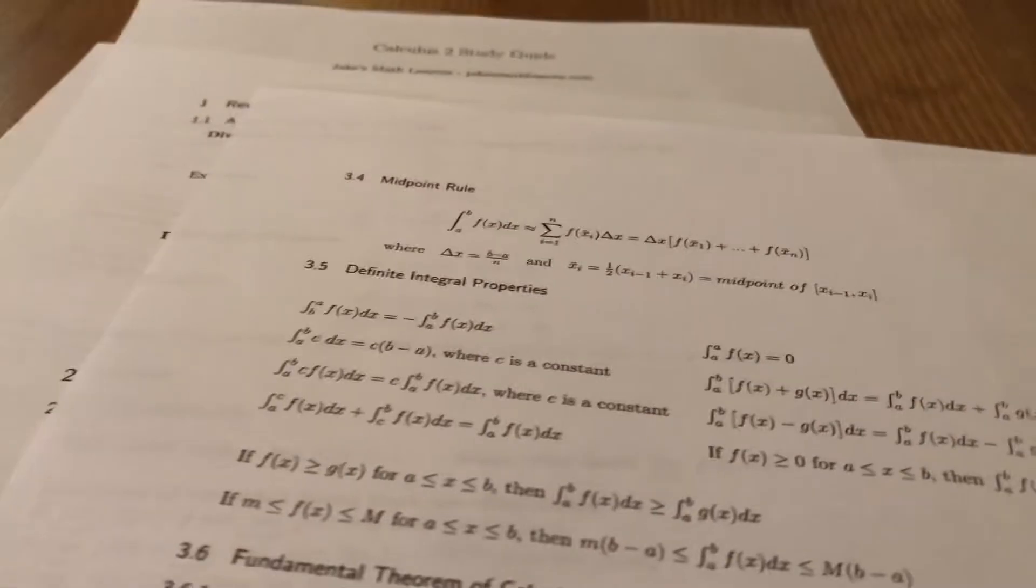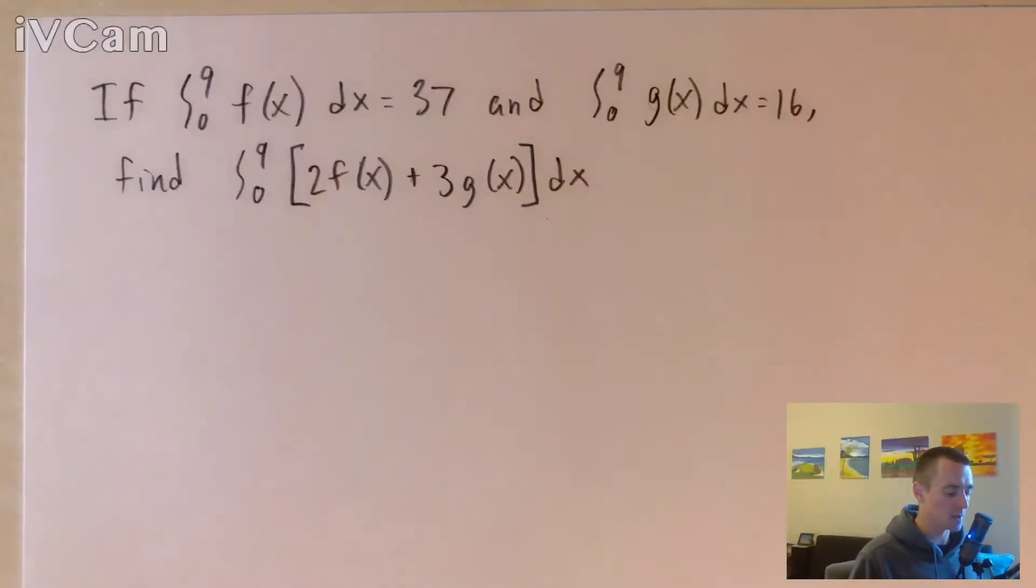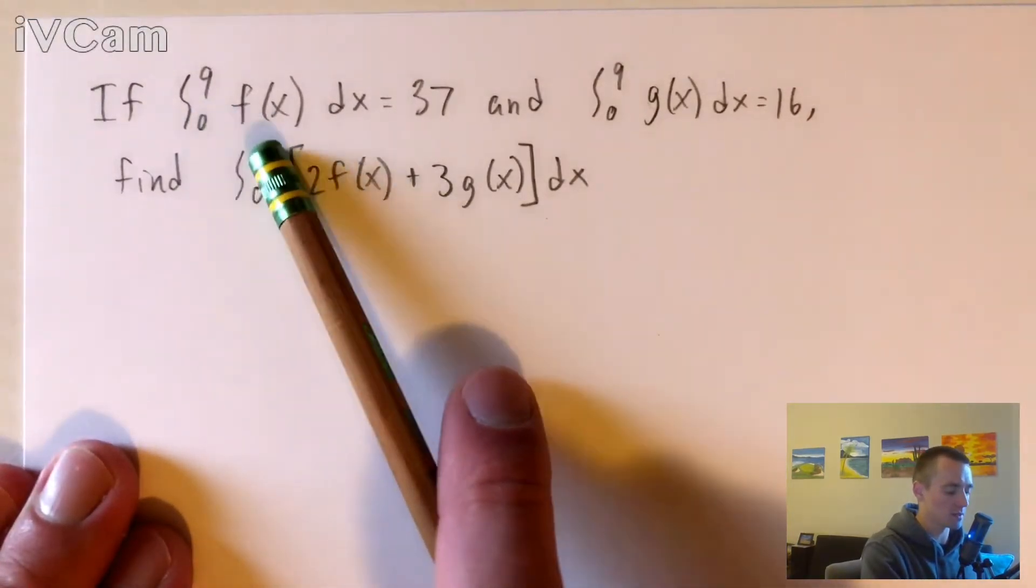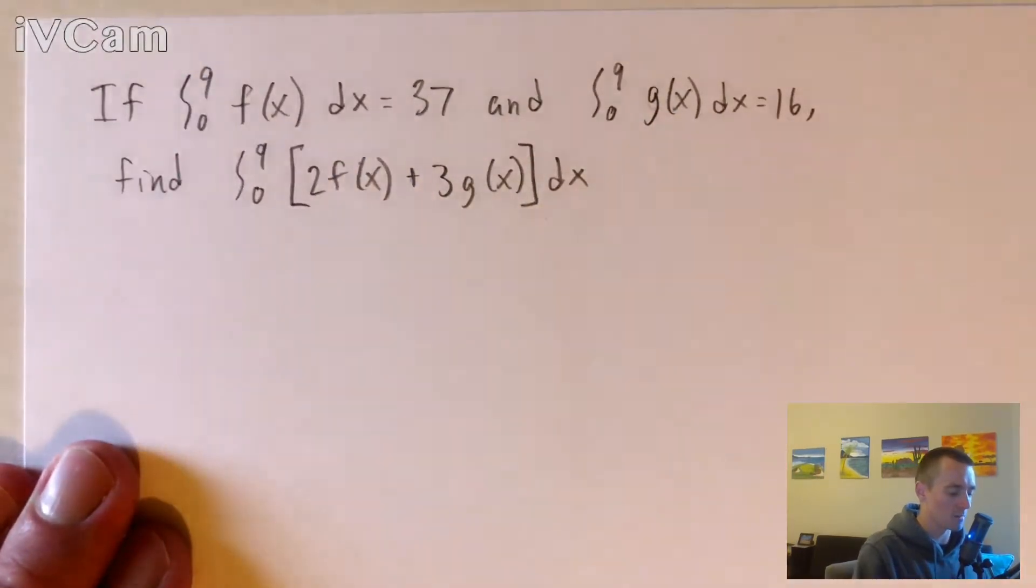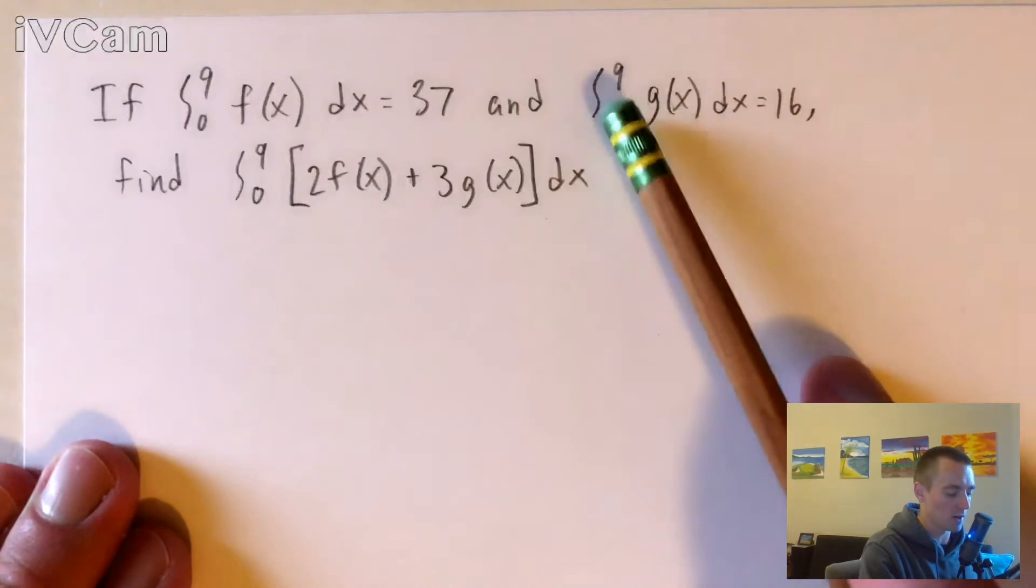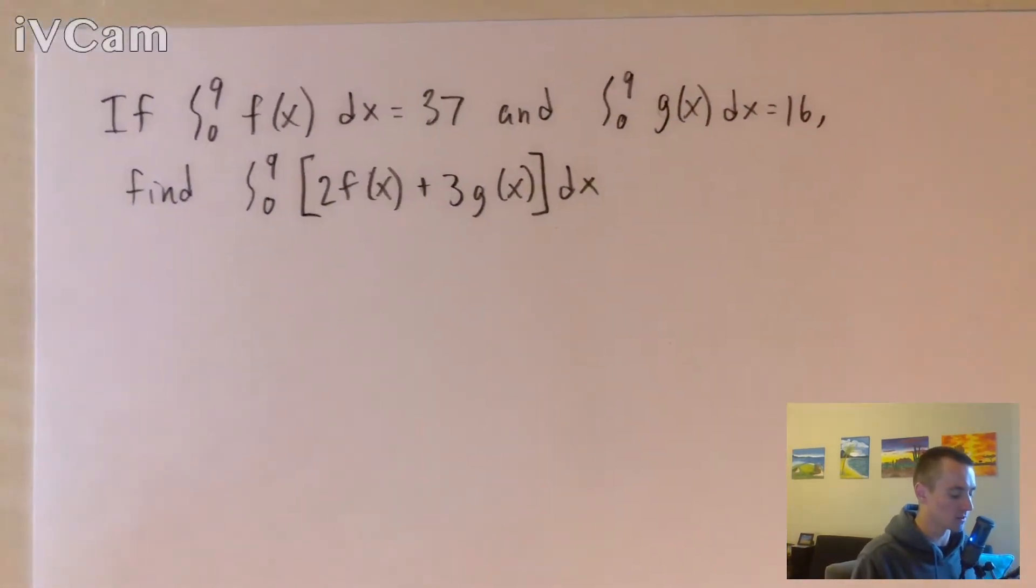But what we wanna do here is use those definite integral properties from that study guide to break this down into smaller pieces so that we can use the information that we're given with these small integrals of just f(x) and g(x) from zero to nine. Because if we can break it down into pieces in terms of these little pieces that we're given, we can then plug those numbers in and figure out what this whole thing is equal to.